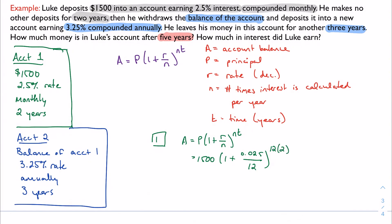And then he keeps that for two years. So this one is just plug it in and get the answer. 1500 times 1 plus 0.025 divided by 12, 12 times 2. And I get 1576.82. Money, we want to round it as money.